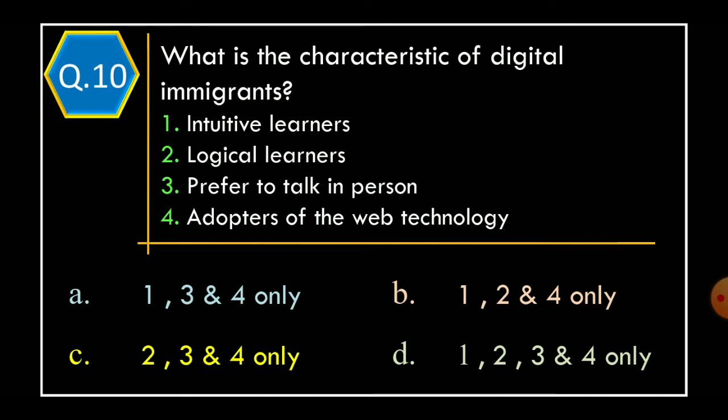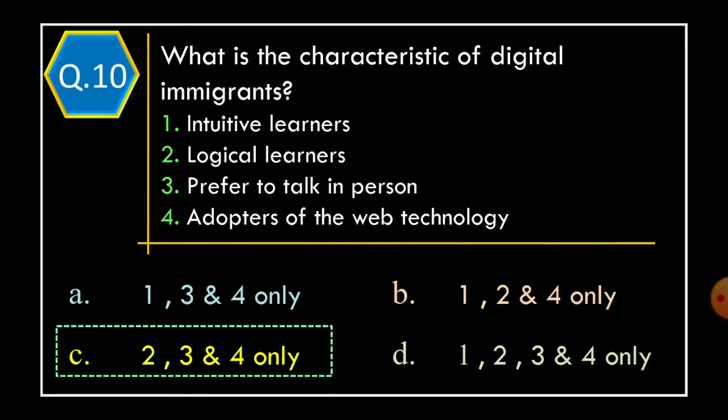Question 10: What are the characteristics of digital immigrants? Statement 1: Intuitive learners. Statement 2: Logical learners. Statement 3: Prefer to talk in person. Statement 4: Adopters of web technology. Choose the correct option. Option A: Statements 1, 3 and 4 only. Option B: Statements 1, 2 and 4 only. Option C: Statements 2, 3 and 4 only. Option D: Statements 1, 3 and 4 only. The correct option is Option C: Statements 2, 3 and 4 only.